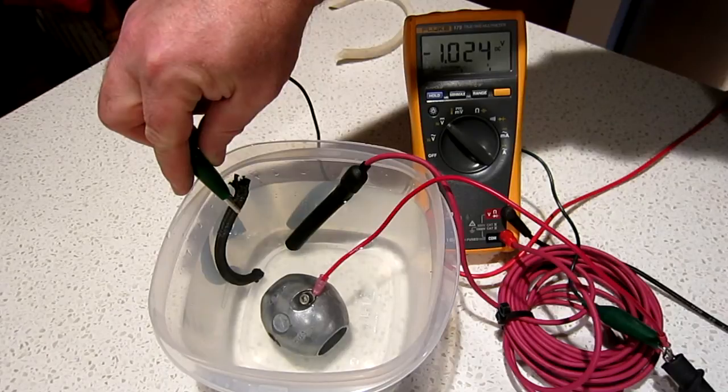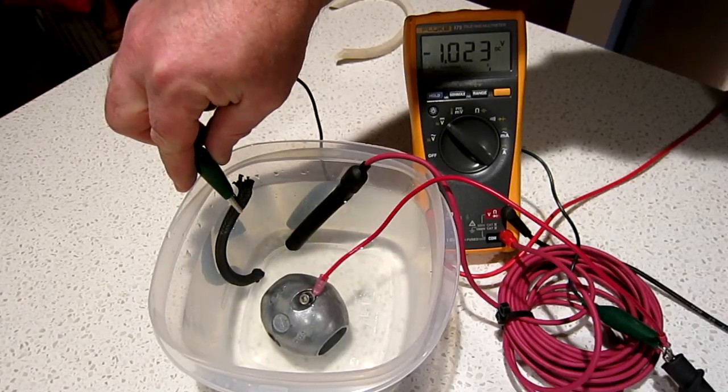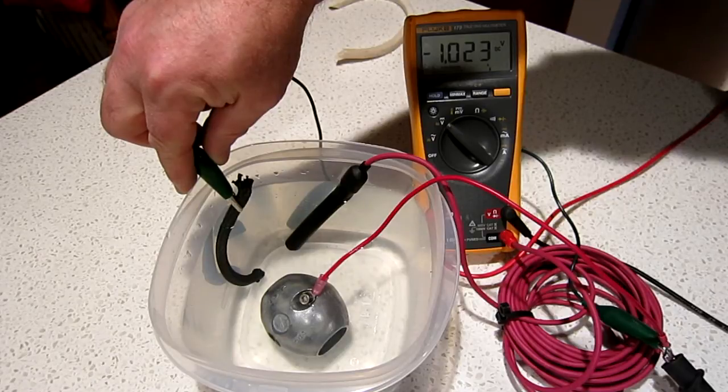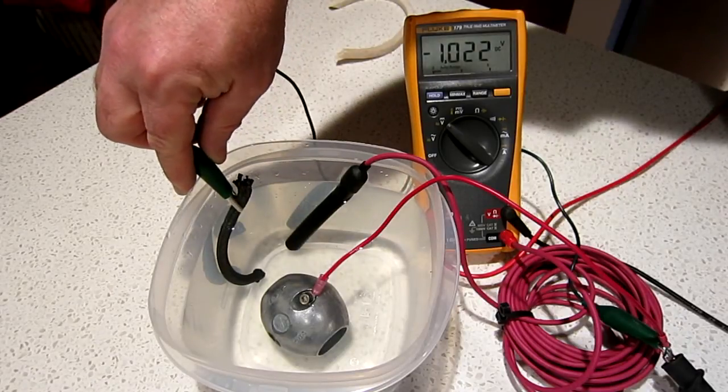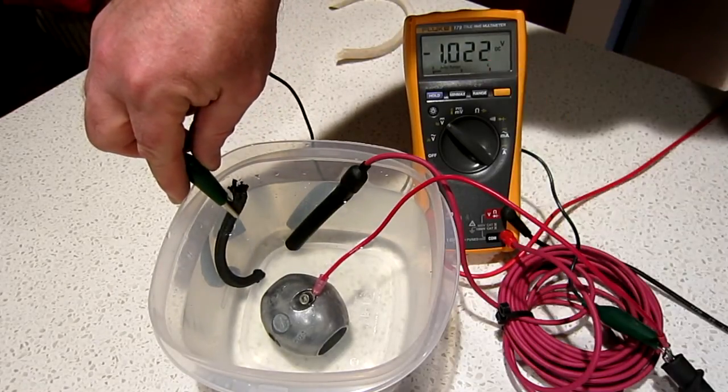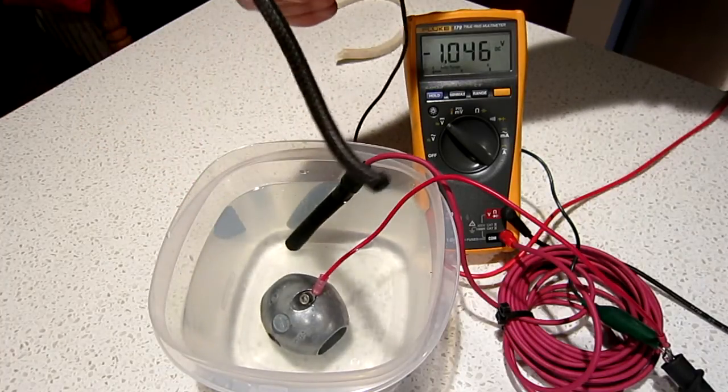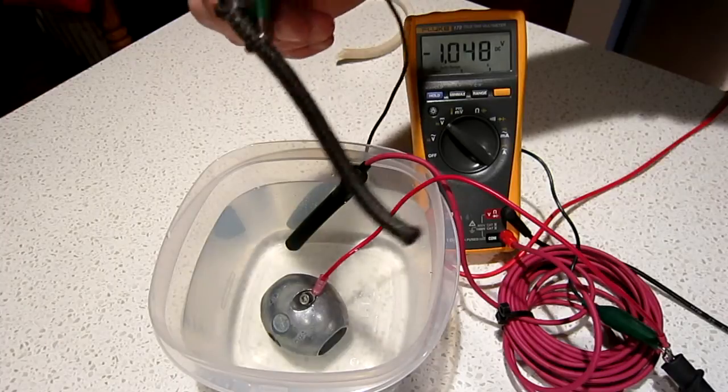Now I'm not touching the zinc, it's separated by just the electrolyte, which is saltwater from the ocean grabbed right off the beach. We can see what happened to our protection. We lost 25 millivolts of protection with a very small piece. This isn't even enough to do one ring on your stuffing box.